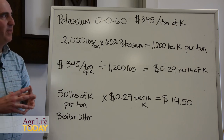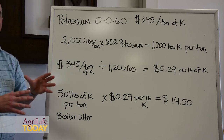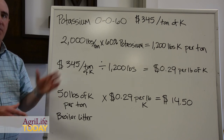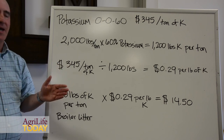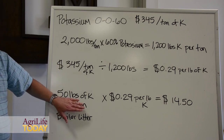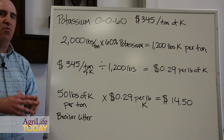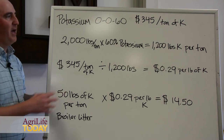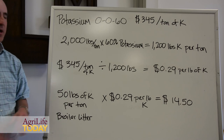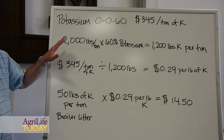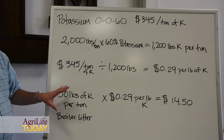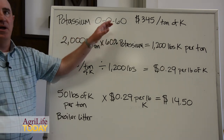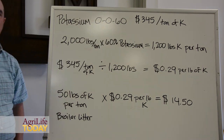The other thing to think about is you may not need all of the nutrients — especially phosphorus — in that poultry litter. So if you only need the nitrogen and the potassium, just figure the values for those. If you're in a situation where your soil phosphorus is low, then go ahead and add in the value of the phosphorus as well. You would do that the same way we did it for nitrogen and potassium, but instead of using 0-0-60, we would use 18-46-0 to calculate the price per pound of phosphorus.